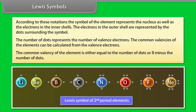While those of nitrogen, oxygen, fluorine, and neon are 8 minus the number of dots — that is 3, 2, 1, and 0 respectively.